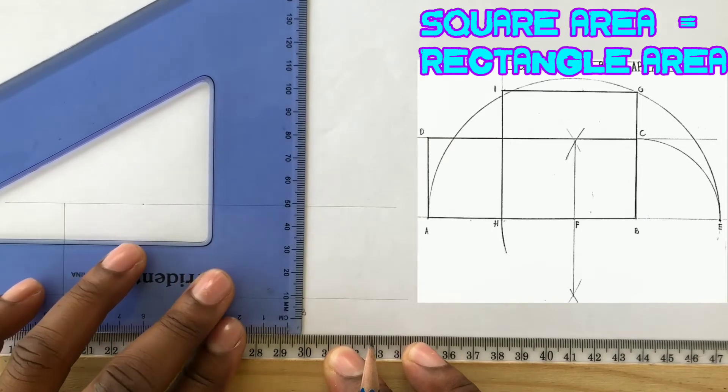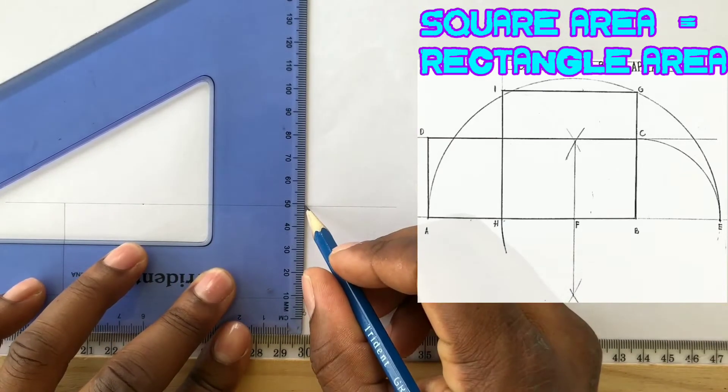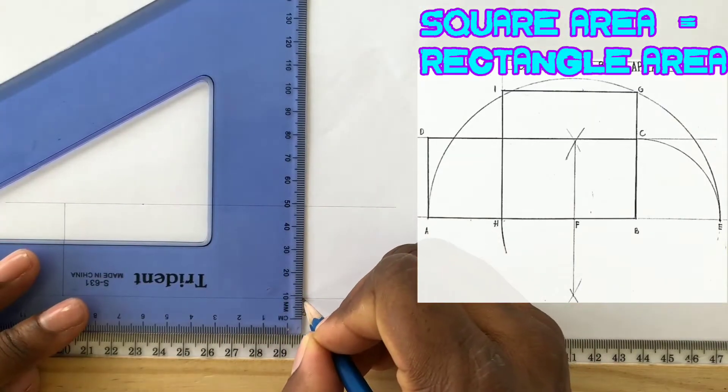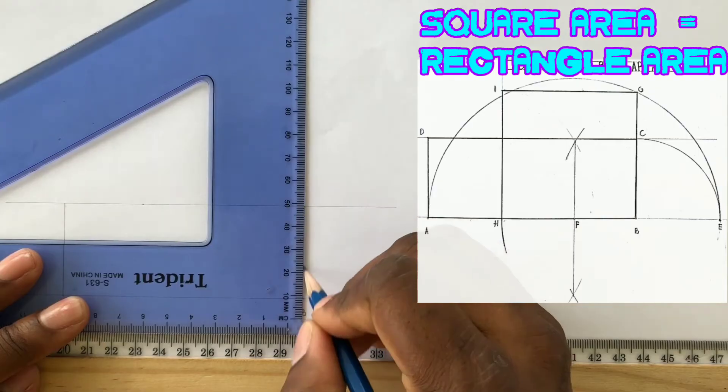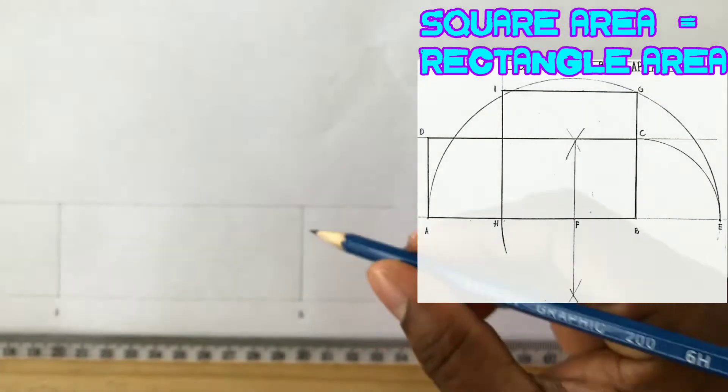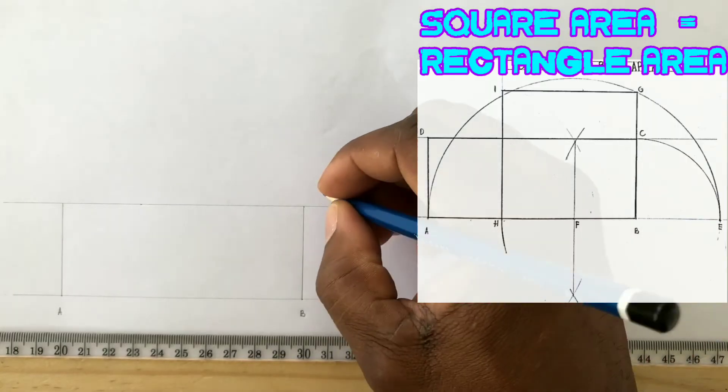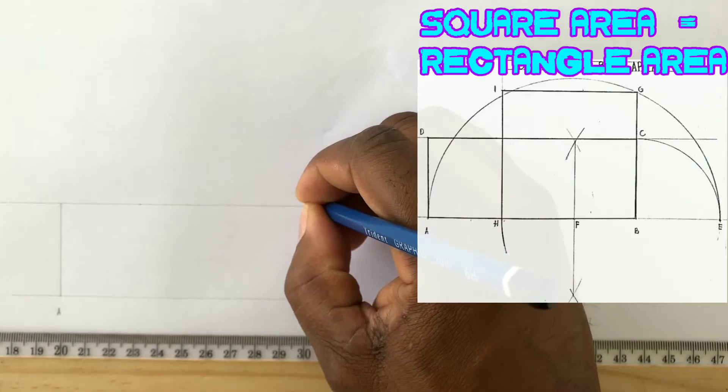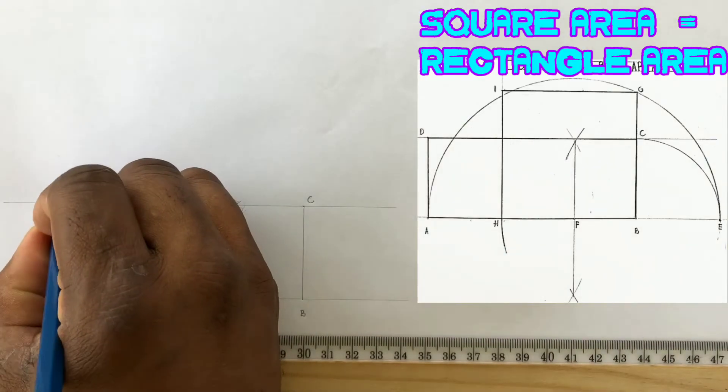You will also draw a perpendicular line from point B to touch the parallel line we drew. This will now give us point C. Label this point C and this point D.